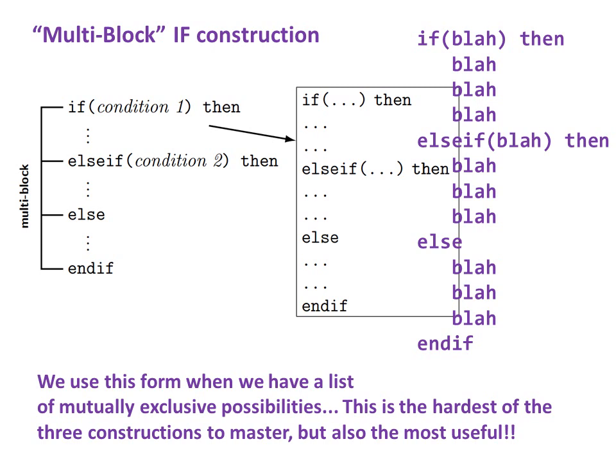We use this form when we have a list of mutually exclusive possibilities. This is the hardest of the three constructions to master, but also the most useful.